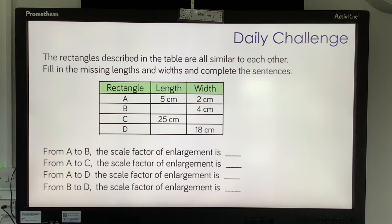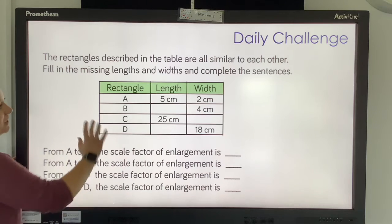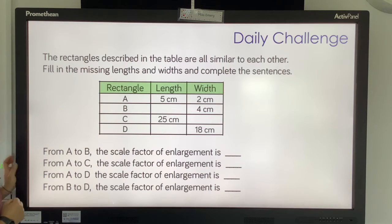So this problem says, the rectangles described in the table are all similar to each other. Fill in the missing lengths and widths to complete the sentences. So you need to work out what the scale factor of enlargement is for each one, but you need to spot the patterns and see if you can work that out.